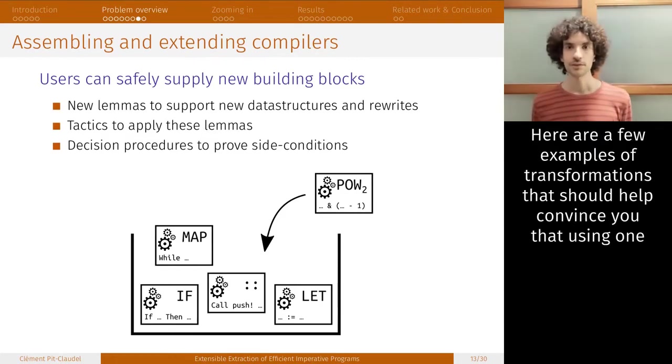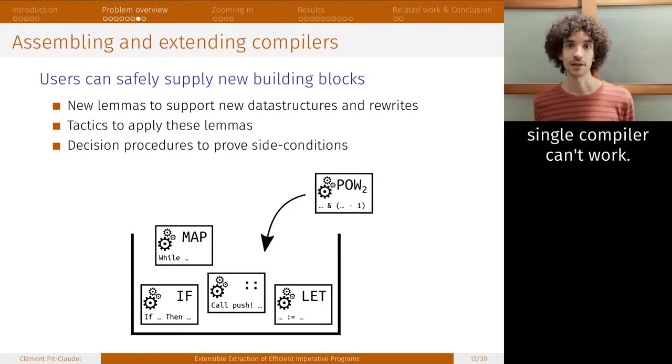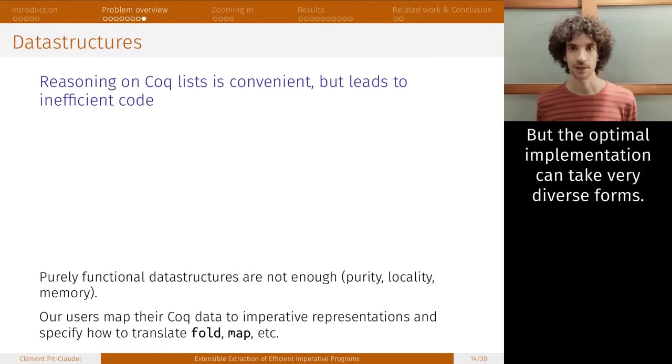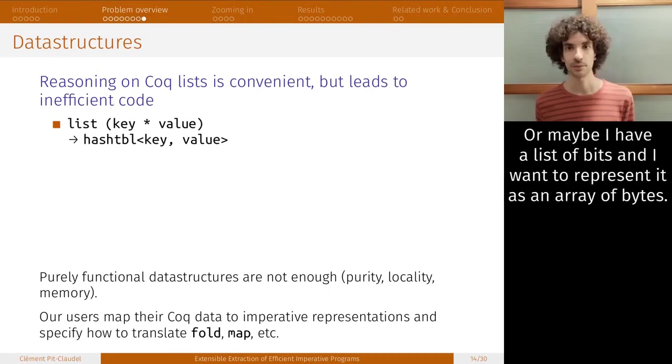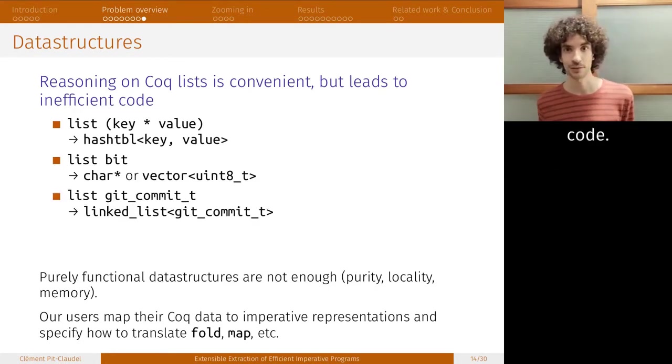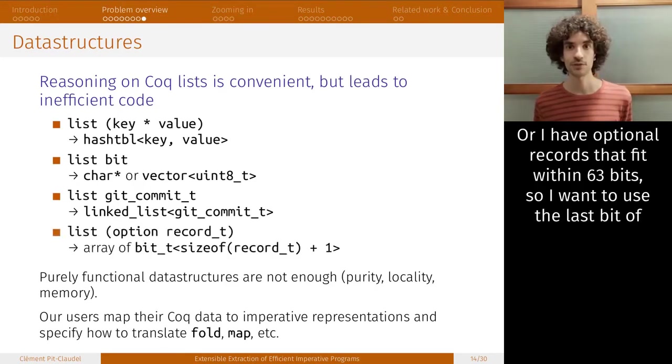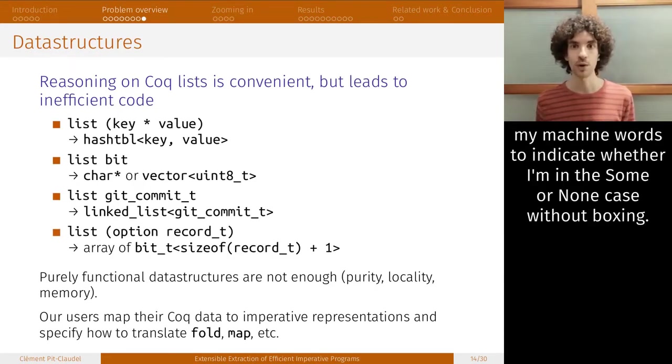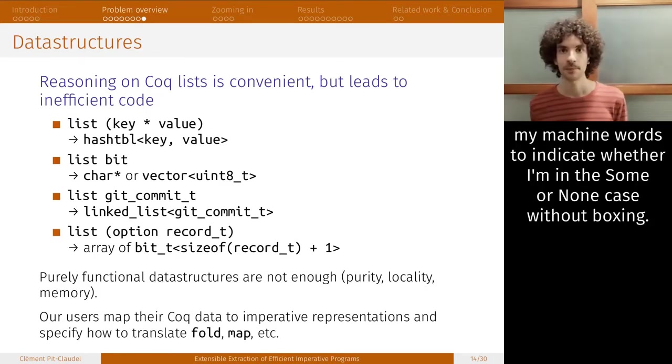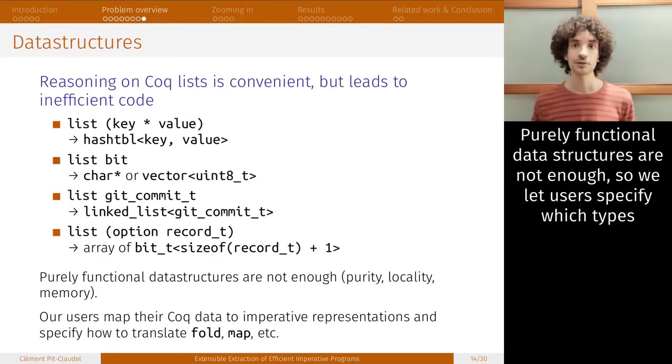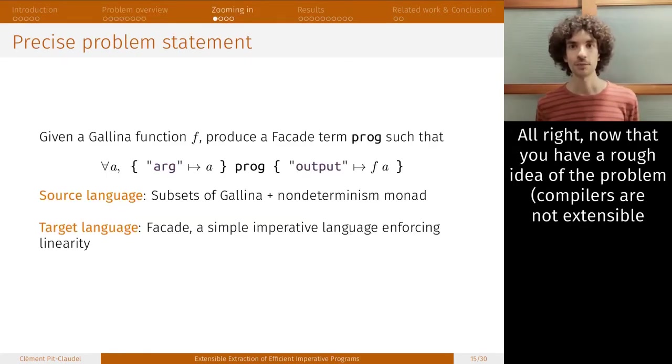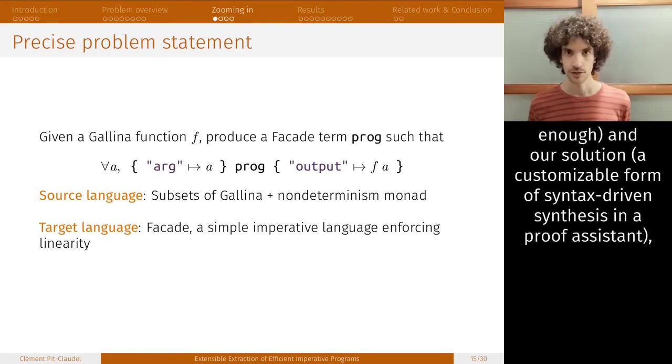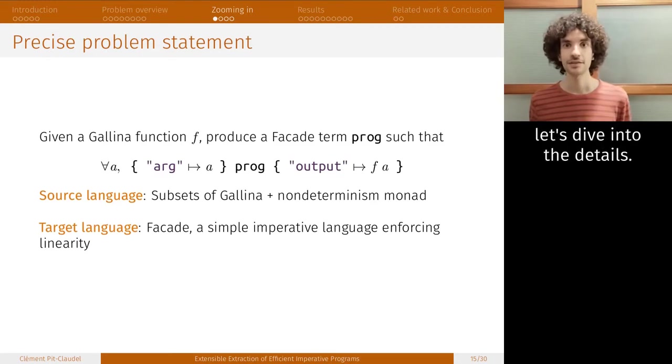Here are a few examples of transformations that should help convince you that using one single compiler can't work. For reasoning about sequences, Coq lists are great. But the optimal implementation can take very diverse forms. For example, maybe I have a list of keys and values, and I want a mutable hash table. Or maybe I have a list of bits, and I want to represent them as an array of bytes. Or I have a list of commits in source control, and I do want a linked list in the generated code. Or I have optional records that fit well within 63 bits, and so I want to use the last bit of my machine words to indicate whether I'm in the sum or the none case, without any boxing. Purely functional data structures are not enough, so we let users specify which types each value should map to in the low-level language.